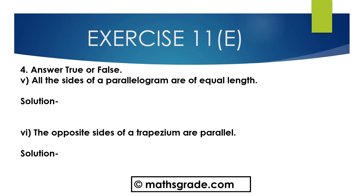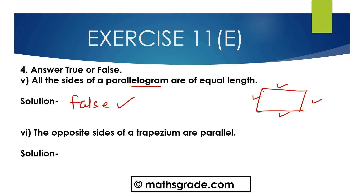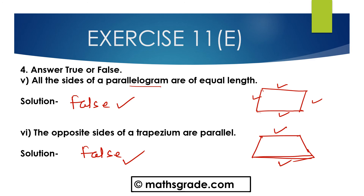Part E: all the sides of a parallelogram are of equal length — in a parallelogram, opposite sides are equal but not all sides, and each angle is not equal to 90 degrees, so this is false. Part F: the opposite sides of a trapezium are parallel — only one pair of sides is parallel but the other two sides are not parallel, so this is also false.